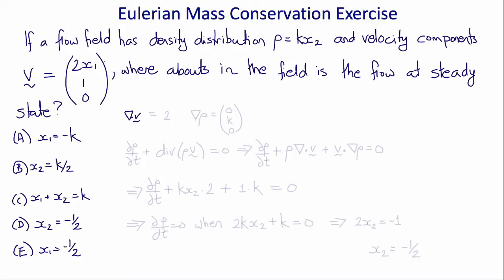To solve this we make use of the continuity equation, for which we will need the divergence of the velocity, which is just 2, and the gradient of rho, which will be (0, k, 0).